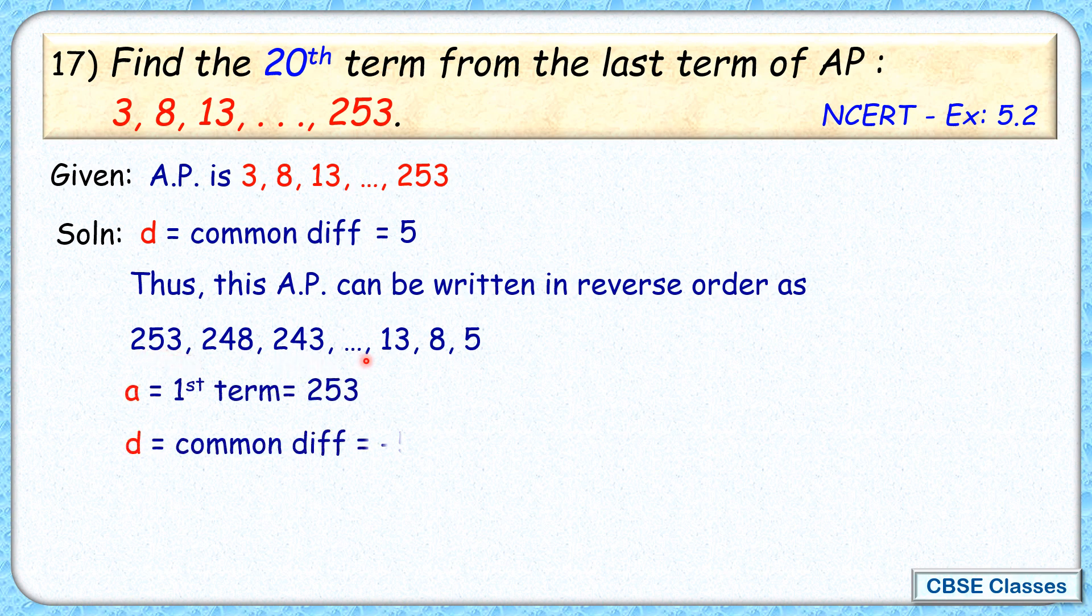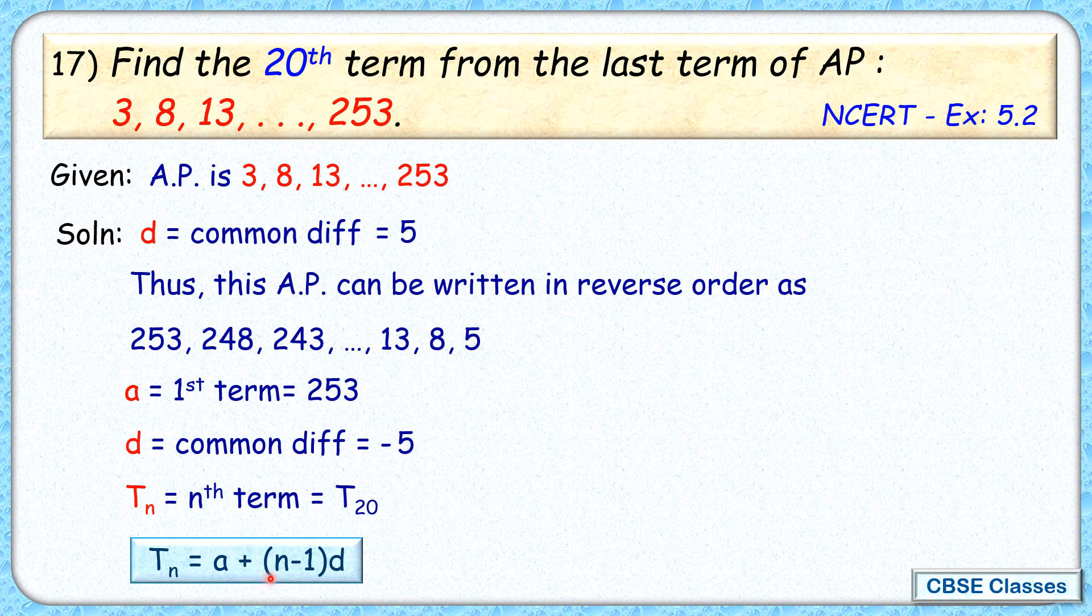And we have to find the nth term. That nth term is the 20th term, which is what we have to find. And of course, we'll use our formula, that is Tₙ = a + (n - 1)d, where n is 20.